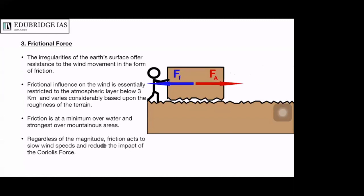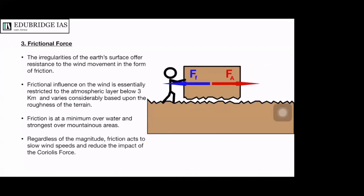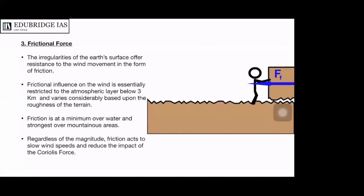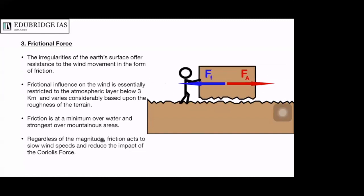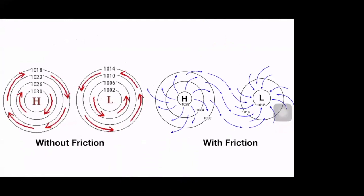The magnitude of the Coriolis force depends on wind's velocity, so friction also reduces the impact of the Coriolis force. We discussed that without friction, wind flows parallel to the isobars. With friction, it slows down and is allowed to cross the isobars, so in high pressure regions, wind is able to cross over the isobars and move to areas of lower pressure.